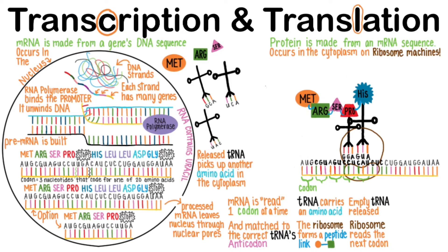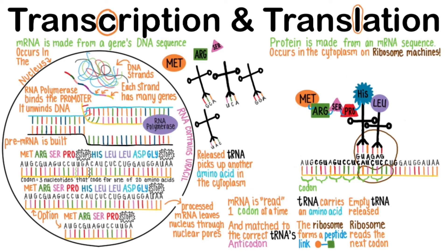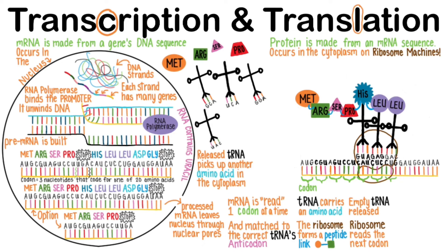The ribosome covalently links proline to histidine with a peptide bond and then reads the next codon, CUC, which codes for leucine. Leucine happens to be my favorite amino acid since its presence in your food triggers muscle growth after you work out. Its arrival kicks out the tRNA that had brought proline. The ribosome forms a peptide link between histidine and leucine, then reads the next codon, CUG — and it codes for another leucine. This is what we call a degenerate triplet: when more than one codon codes for the same amino acid. Now the tRNA that carried histidine is kicked off the ribosome to find another histidine.